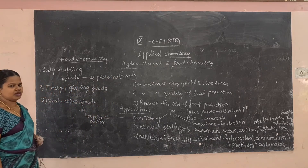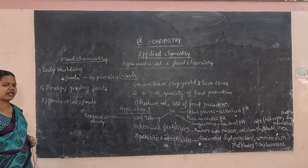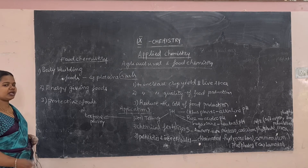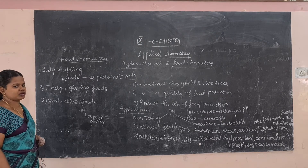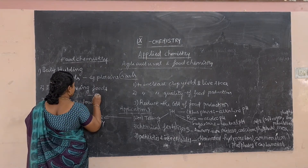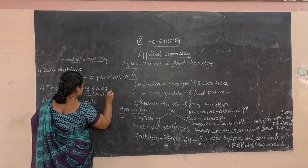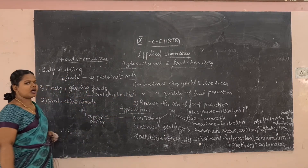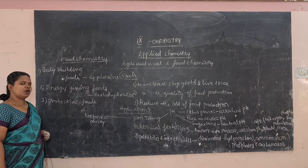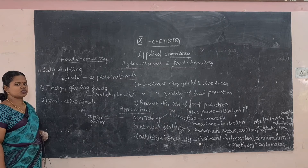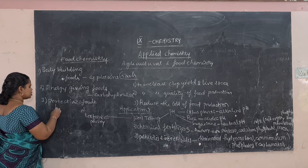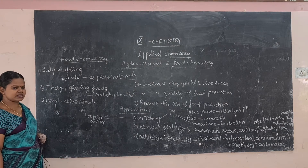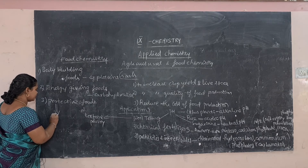The second type is energy giving food — the food required to produce energy for all our daily work. Example: carbohydrates. Carbohydrates are largely present in potato and rice. The third type is protective food — foods needed to protect our body from deficiency diseases. Example: vitamins and minerals.